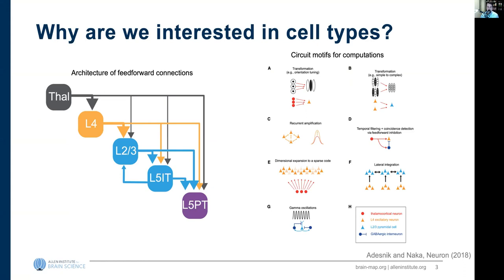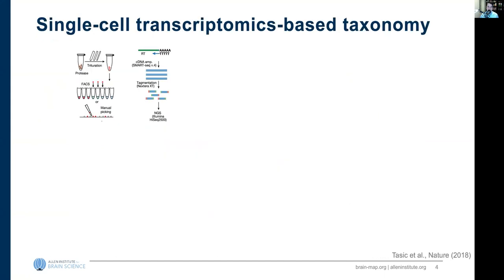Historically, cell type investigations relied on morphology, intrinsic properties, or functional properties. An avenue that has really taken off is using single-cell transcriptomics to develop cell type taxonomies. Tissue is dissociated into individual cells, RNA is isolated, reverse-transcribed, and sequenced to determine gene expression in a single cell. This approach is high-throughput — from thousands to hundreds of thousands and even millions of cells — and extremely high-dimensional, using tens of thousands of genes as the feature space.